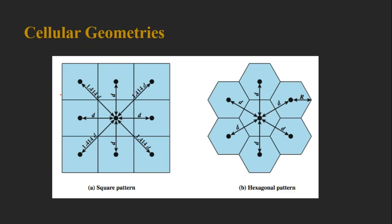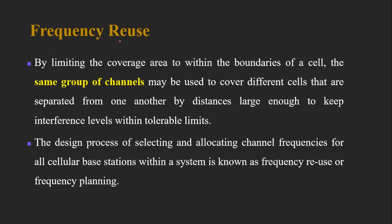To further prove this, in a square pattern the distance between cell centers is d in one direction but 1.414d diagonally, so there is always a possibility of interference. In a hexagonal cell, every neighboring cell center is at an equal distance from the central cell. This makes it much easier to build a theoretical model, and that is the reason we select the hexagonal cell shape.